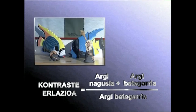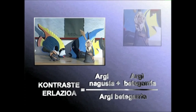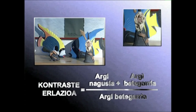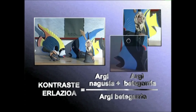Oartu bazarete, formulan bi argiak batu ditugu zatiketa egin aurretik. Izan ere, ezenako hainbat gunetan bi argiak, nagusia eta betegarria, nahastu egiten dira.